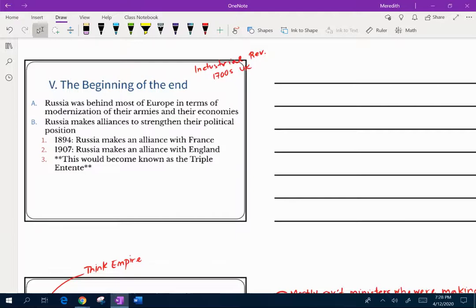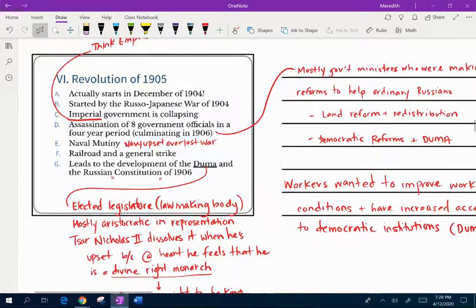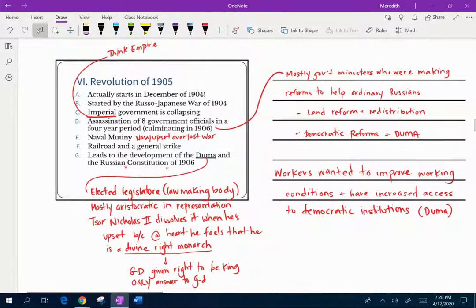So this is a very easy, super easy slide. It's just reminding you guys that this is the beginning of the end. Russia's behind of Europe and most of their modernization. So they don't have a lot of technology, factories, mass production, railroads. And they're really behind, especially with their armies and their technology and their economies. And so they're trying to strengthen their political positions, just so that they don't get attacked and lose. And so this is where you have the beginnings of the triple entente for world war one. Now when we come down here, Russia is once again not doing really well technologically speaking.